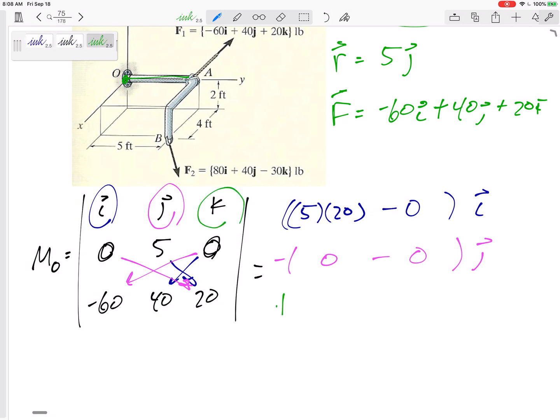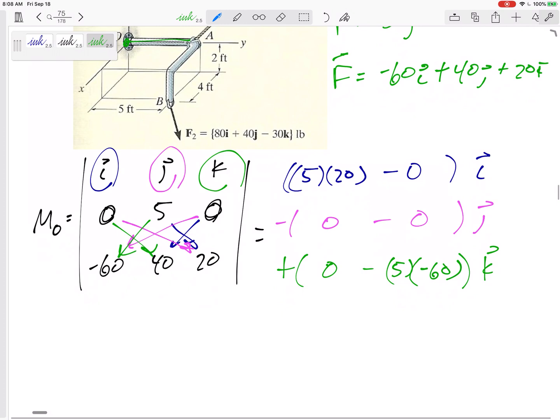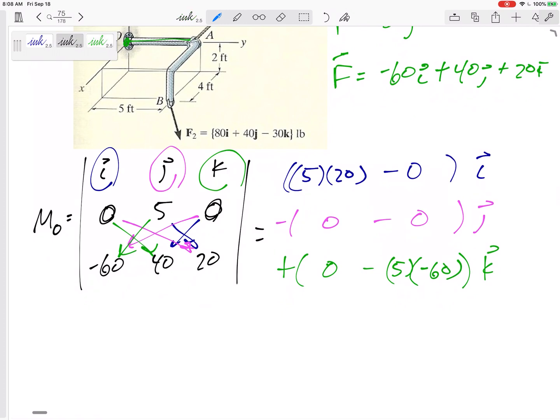And then my k component, plus my k component is going to be, let's see, that minus that, 0 minus, let's be careful here, 5 times negative 60. So my total moment is going to be 100 in the i plus 300 in the k.